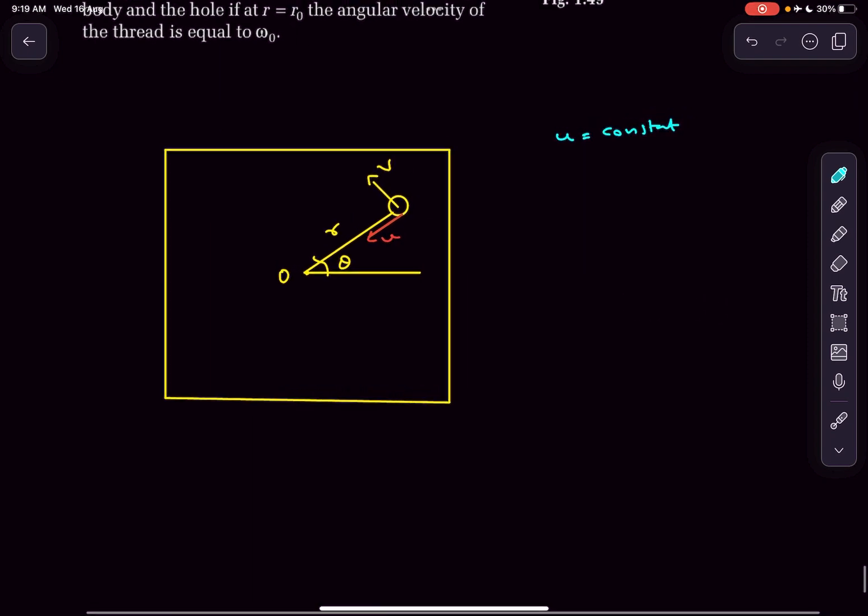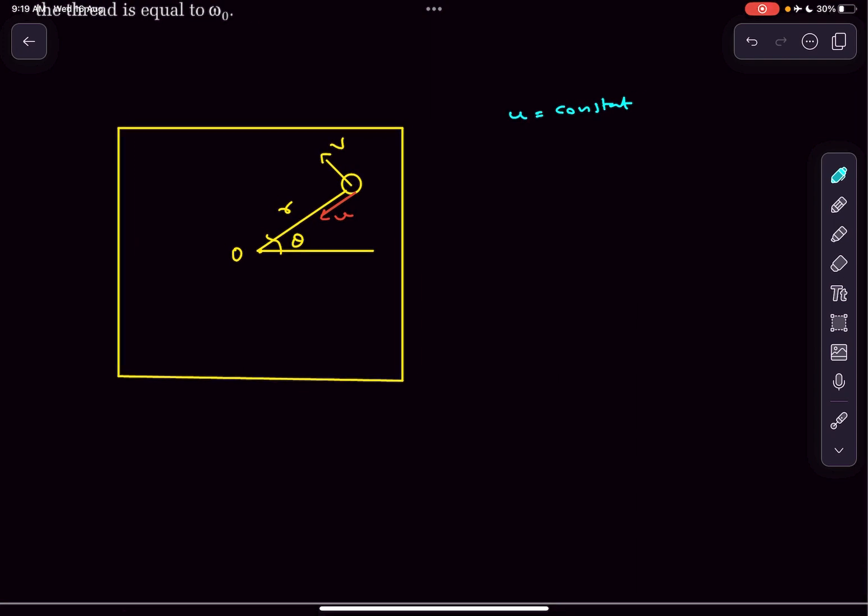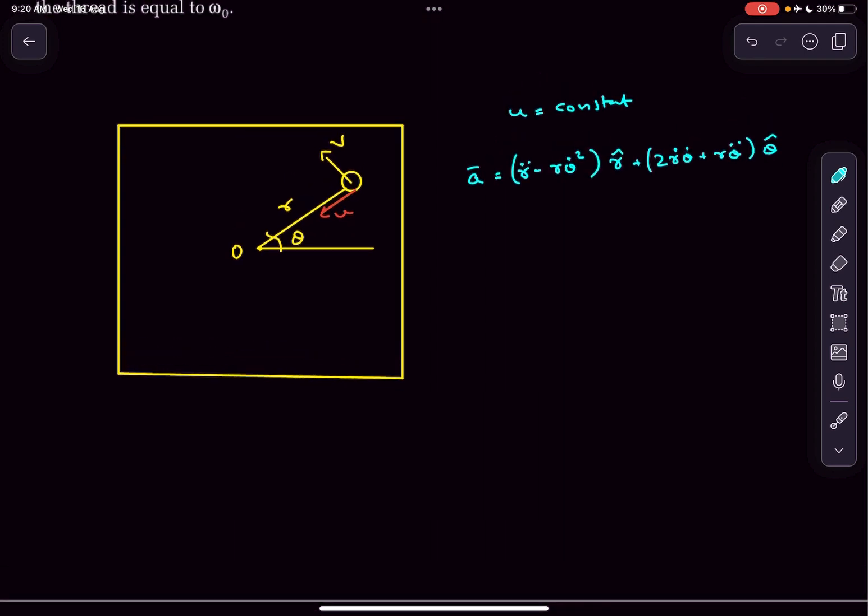As r and theta are varying, it's better to solve this using polar coordinates. I'm borrowing a result from a previous video where I derived the acceleration in polar coordinates. If you write the acceleration of a particle in polar coordinates it takes this form.